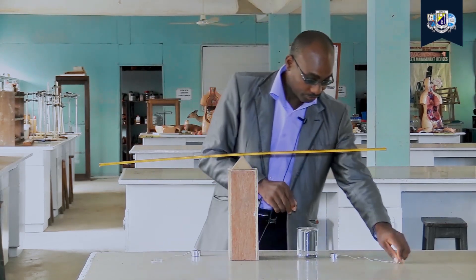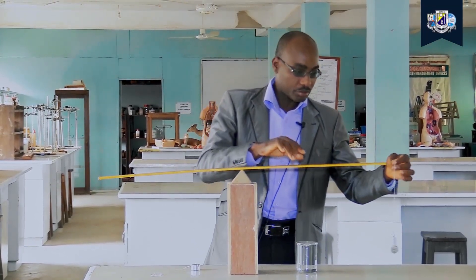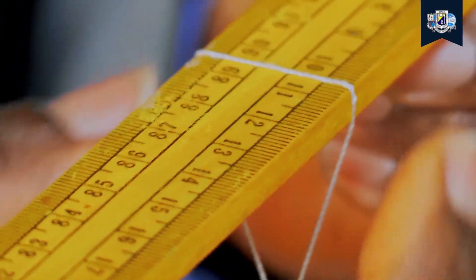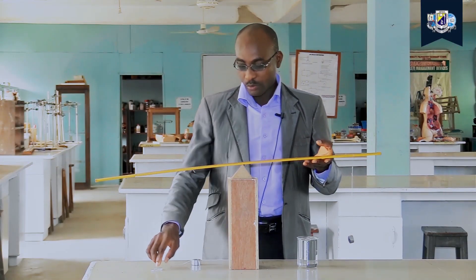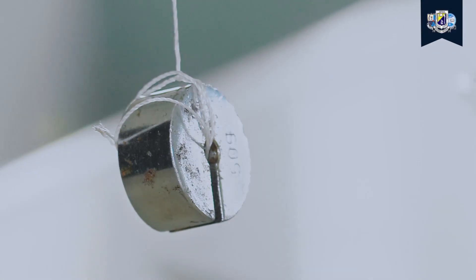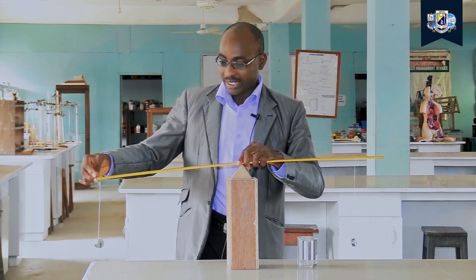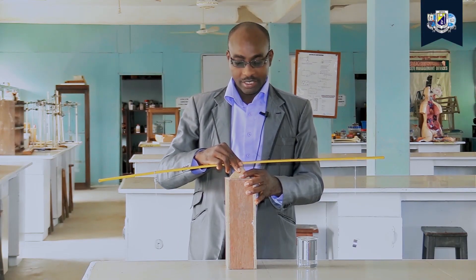Now for our demonstration: we will place the 50 gram mass at the 10 cm mark of the meter rule. When balancing it, we must ensure that the mass is not oscillating or vibrating, because that will affect the balancing of the meter rule. This is one of the precautions to take into consideration when carrying out this experiment under examination conditions.